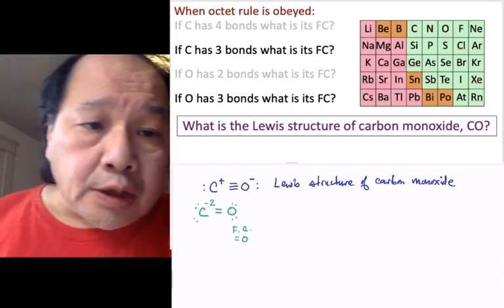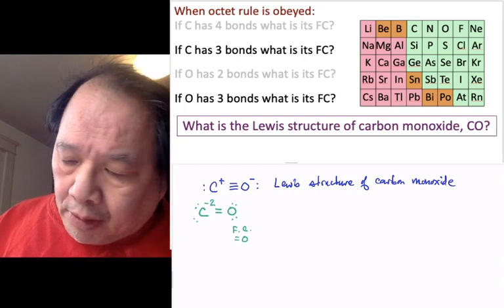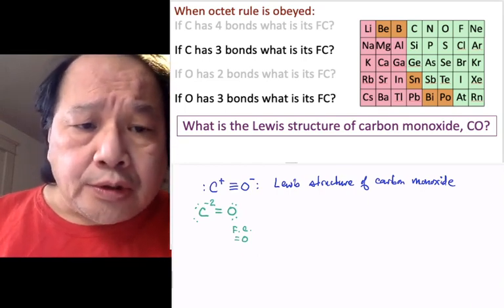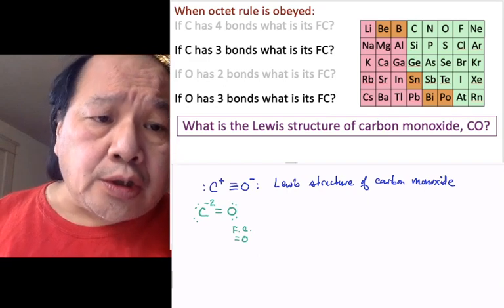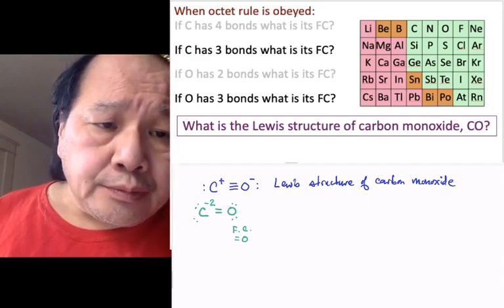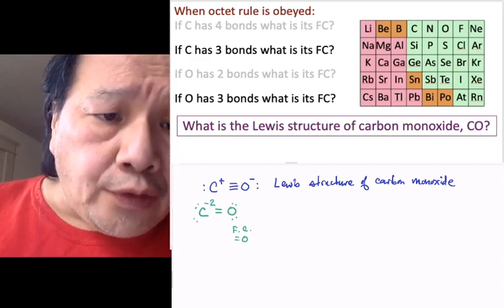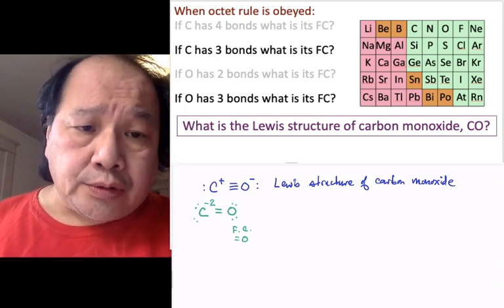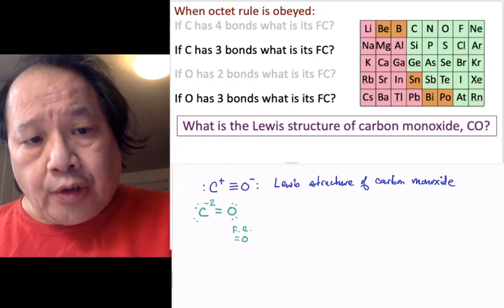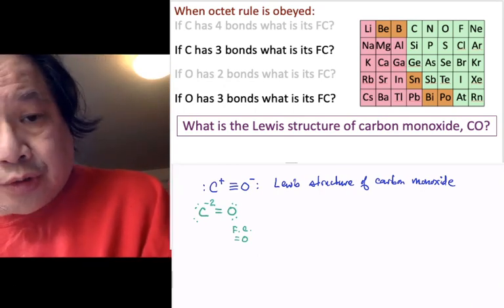Its formal charge must be minus two. And the rule is, you must always write all non-zero formal charges in a correct Lewis structure. You must write all non-zero formal charges in a correct Lewis structure. And we're very close to seeing what the problem with this structure in green is.